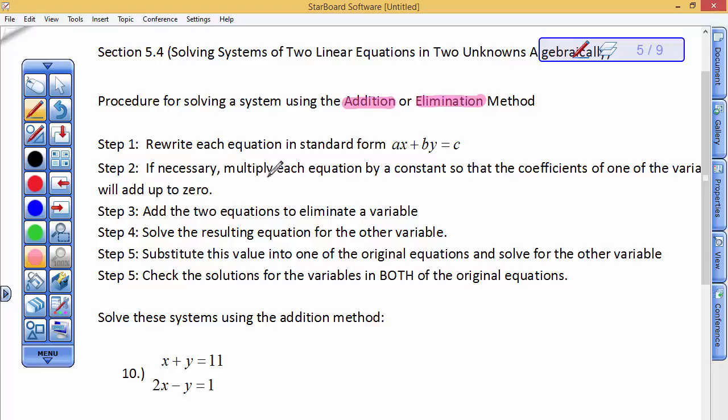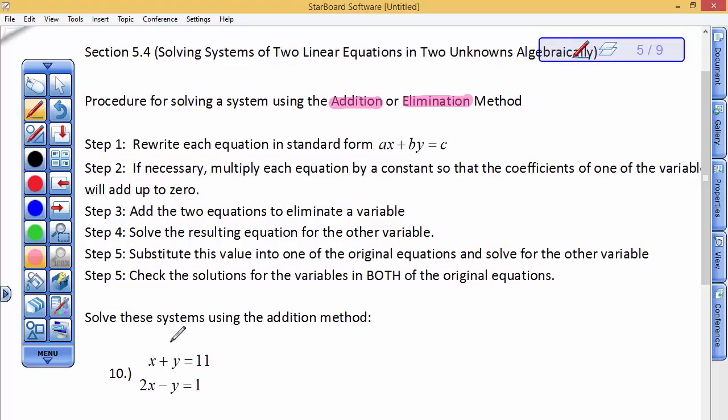If necessary, multiply each equation by a constant, that just means a number, so that the coefficients of one of the variables will add up to zero. So, do you see this letter y? The coefficients of the letter y in question number 10 are 1 and a negative 1. They are already ready, and their coefficients will add up to zero.